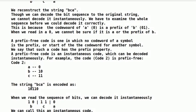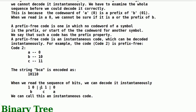The string BCA is encoded as 10110. When we read the sequence of bits, we can decode it instantaneously with 10 for B, 11 for C, 0 for A, without any ambiguity and we get back the string BCA. We can say that code 2 is an instantaneous code.